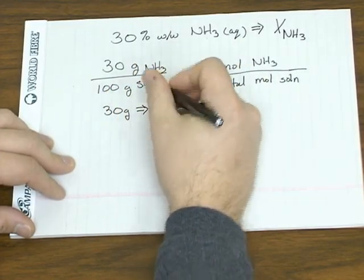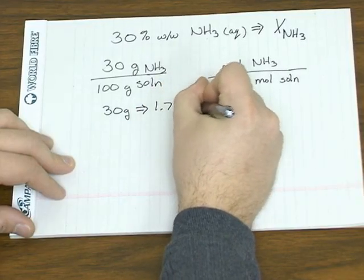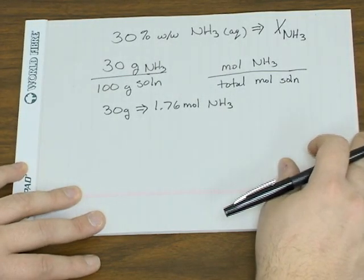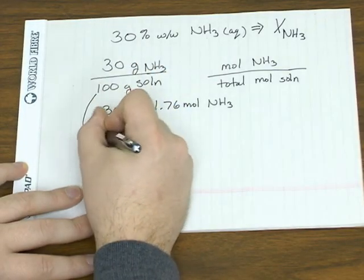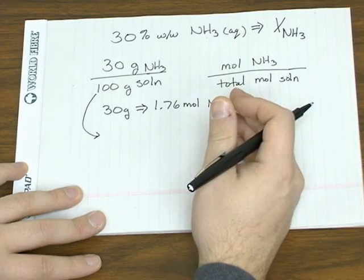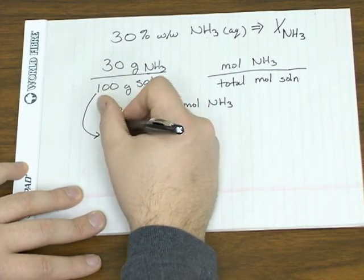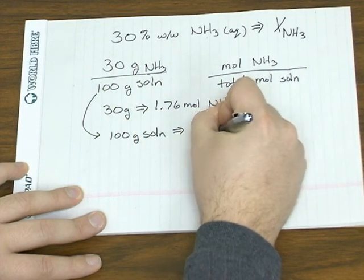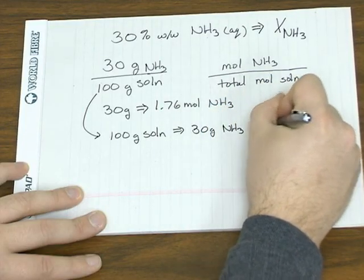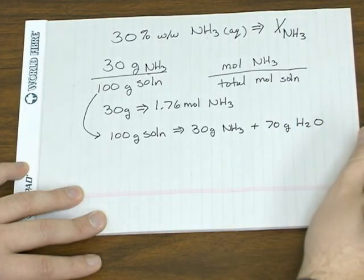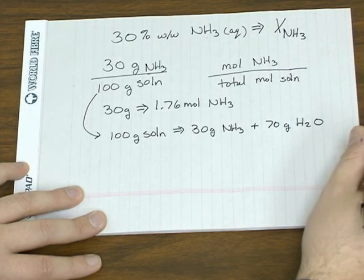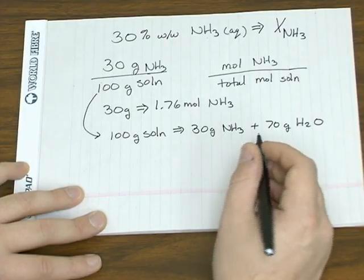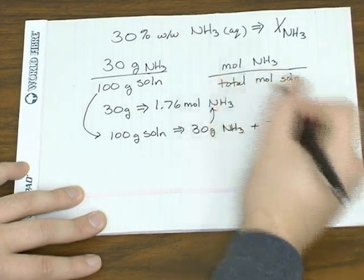So we've already got the moles of ammonia. We just calculated that, and that was 1.76 moles. And if we assume that we just have a pure ammonia solution, which means it's just ammonia and water, that 100 gram solution is going to be 30 grams of ammonia and 70 grams of water. Because we're assuming there's nothing else in the solution but ammonia and water. So again, that's 1.76 moles.